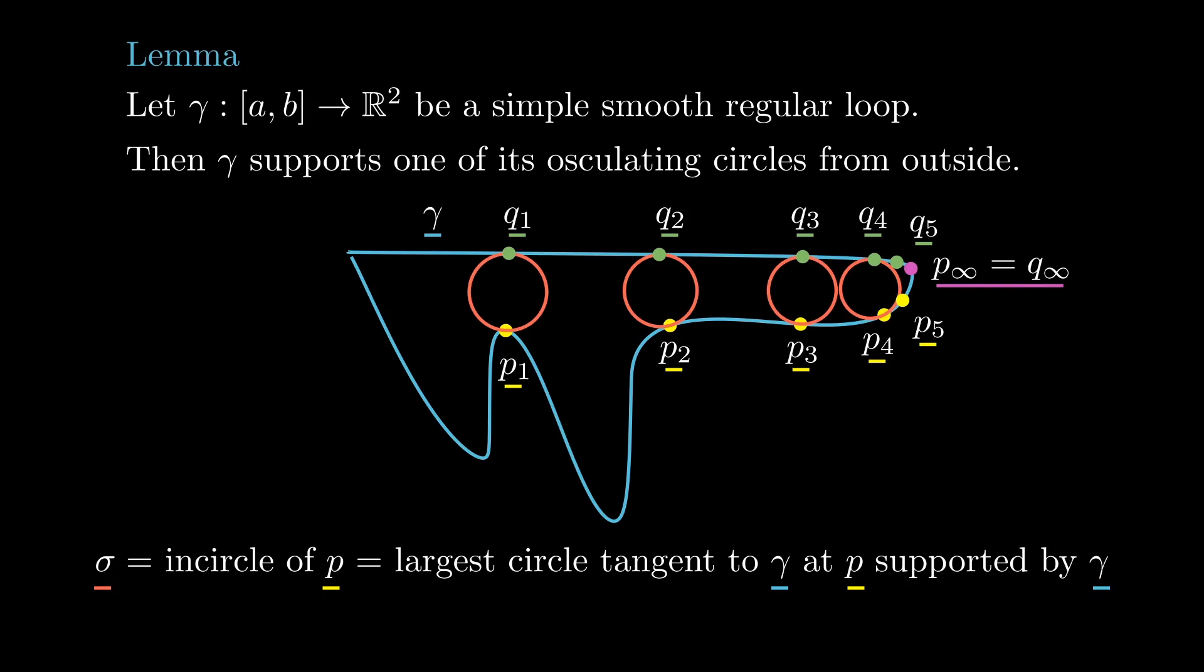But there is a problem. By our claim, for each fixed n, q infinity must lie in gamma n. Since n is arbitrary, this implies that q infinity equals p infinity, but these points are distinct by construction, which is a contradiction.